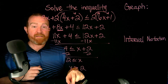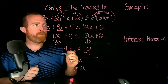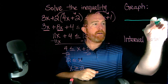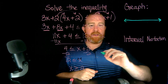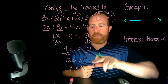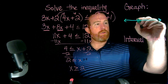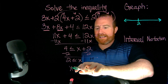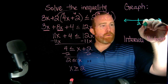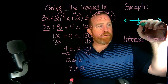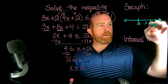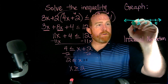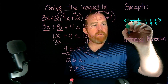They want us to graph this on a number line. We're going to draw a number line that goes forever in both directions and indicate the value of 2. X is greater than or equal to 2 — here are some numbers greater than 2: 3, 4, 5. And some numbers smaller than 2: 1 and 0.